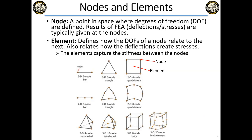A node is a point in space where there are degrees of freedom. The results of FEA are typically given at the nodes — when you solve for deflections, that math is happening at the nodes. The element defines how the degrees of freedom of each node relate to each other, and how deflections create stress. The element connecting nodes has a certain stiffness, which is how you get deflections and stresses.